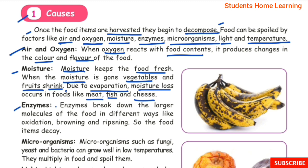Enzymes: Enzymes cause chemical reactions. Enzymes break down the larger molecules of the food in different ways like oxidation, browning, and ripening. So the food items decay.